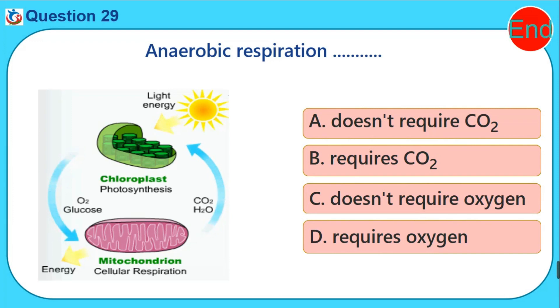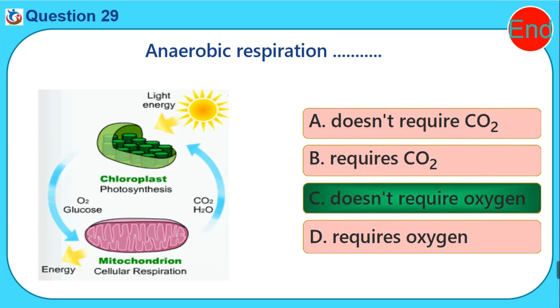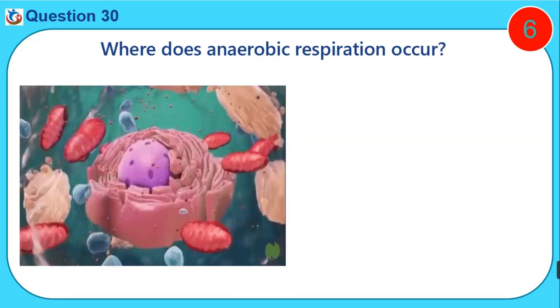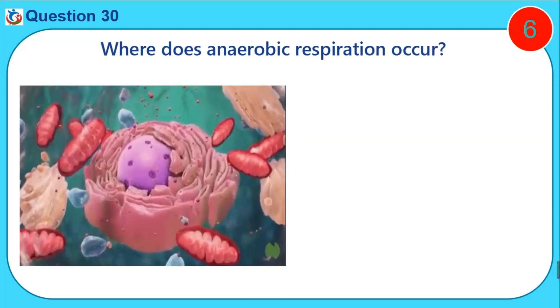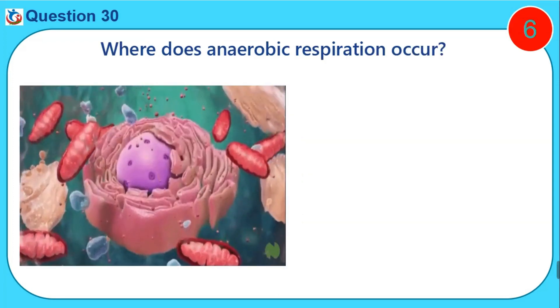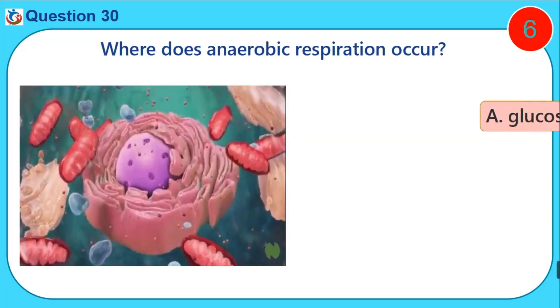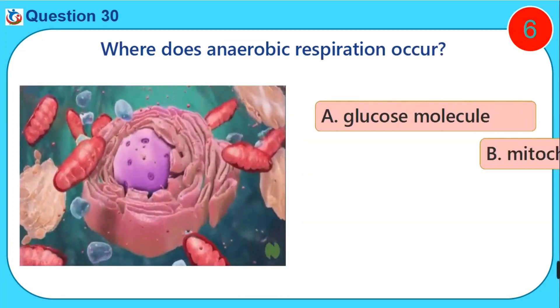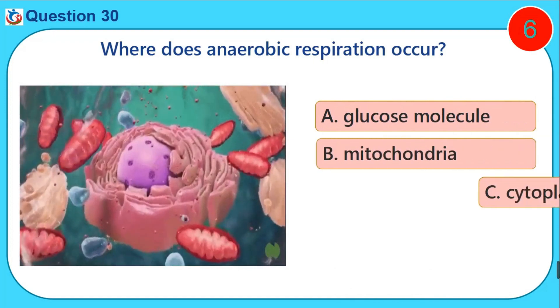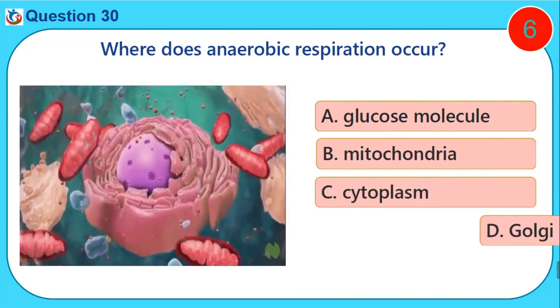Where does aerobic respiration occur? A. Glucose molecule. B. Mitochondria. C. Cytoplasm. D. Golgi bodies.